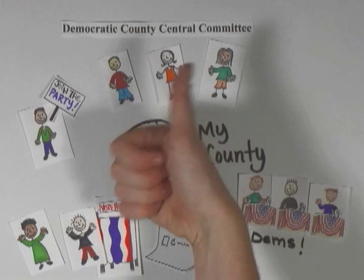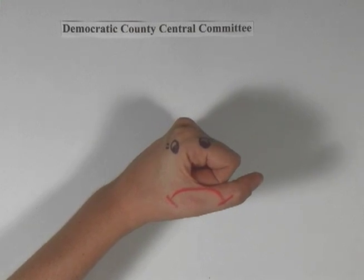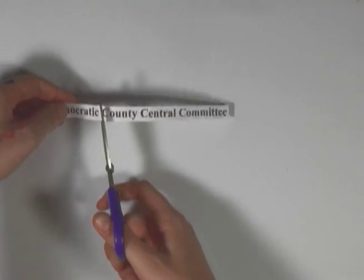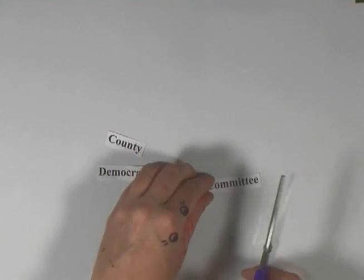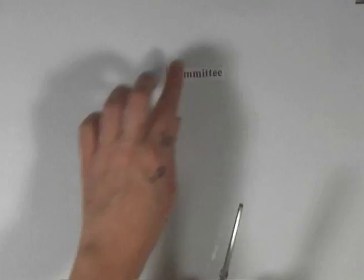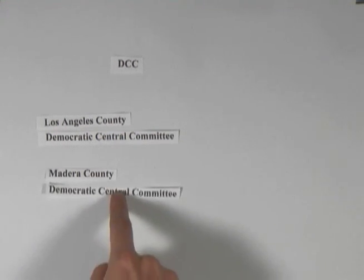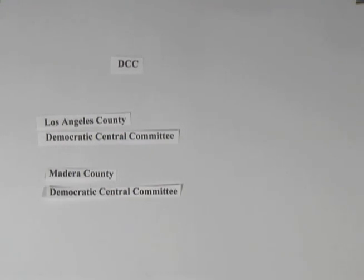Since both 'Democratic County Central Committee' and its abbreviation DCCC are kind of a mouthful, those terms are often avoided in favor of alternatives. In addition to being referred to as the Democratic Party of their county, they are sometimes called county central committees or simply county committees. When it comes to abbreviations, they are usually just called DCCs — with only two Cs — because the official name begins with the county's proper name followed by 'Democratic Central Committee.' For example, the Los Angeles County Democratic Central Committee, or Los Angeles County DCC, and the Madera County Democratic Central Committee, or the Madera County DCC.